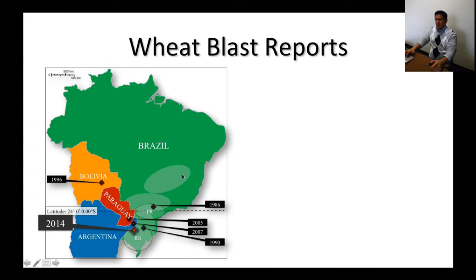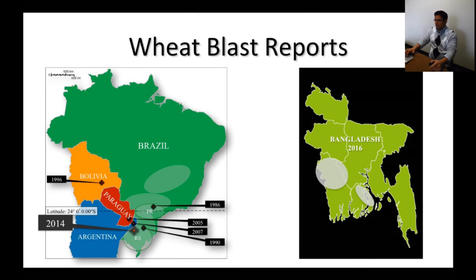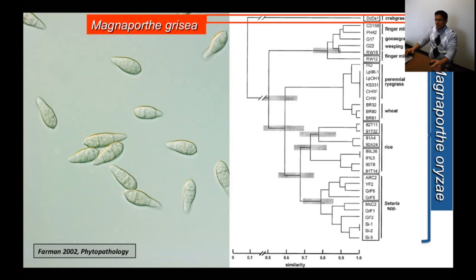Wheat blast is not present all over Brazil — it is only present in the wheat-growing regions. It was reported in the Paraná state in the 1980s. In Bolivia, the department of Santa Cruz is the most important for wheat production. We also have Paraguay, and the northeast part of Argentina. The 2016 reports in Bangladesh covered different regions where the disease was reported.